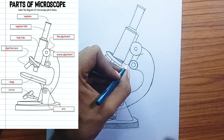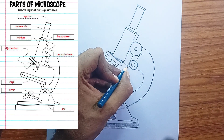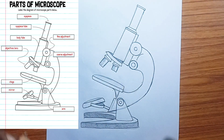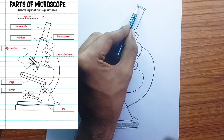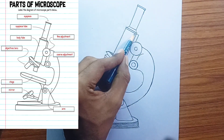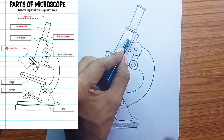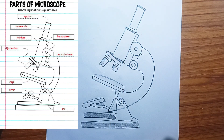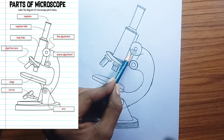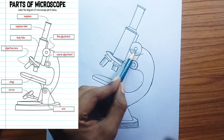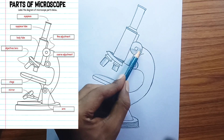Mirror. Located beneath the stage, this component is used to reflect ambient light, or light from an external source, upwards through the specimen and into the objective lens. In more modern microscopes, this is often replaced by a built-in light source or illuminator.